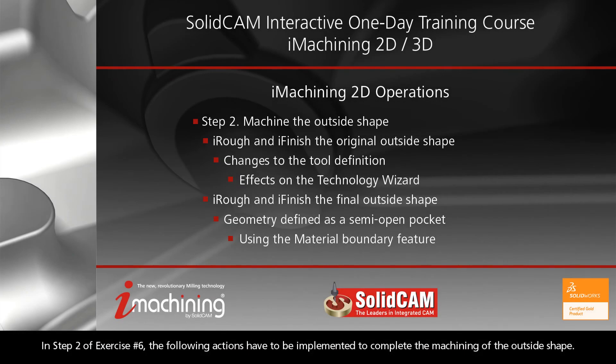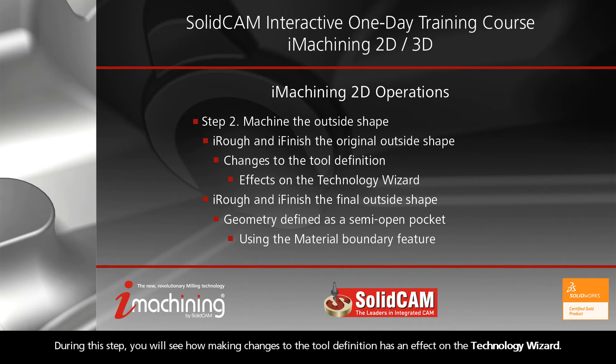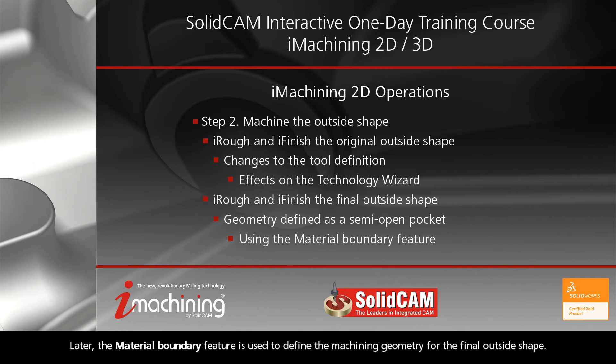In step 2 of exercise number 6, the following actions have to be implemented to complete the machining of the outside shape. During this step, you will see how making changes to the tool definition has an effect on the Technology Wizard. Later, the material boundary feature is used to define the machining geometry for the final outside shape.